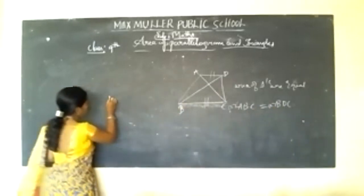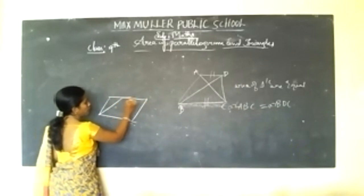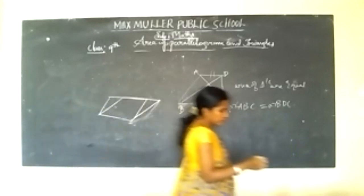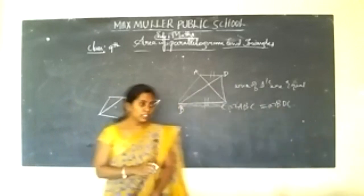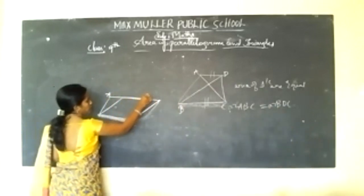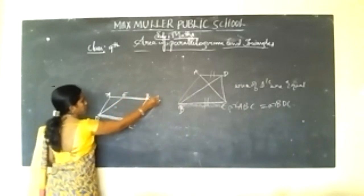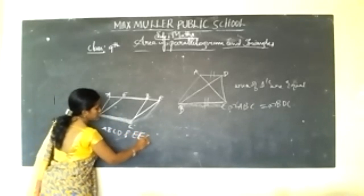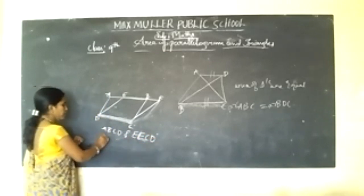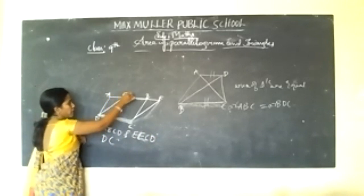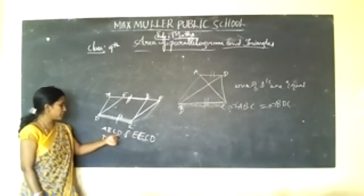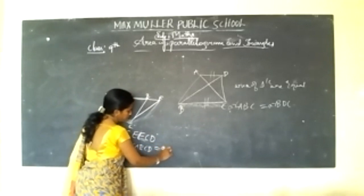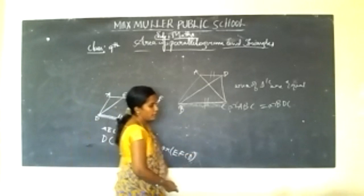Similarly, if you have two parallelograms ABCD and EFCD with common base DC lying between parallel lines, you can conclude area of ABCD is equal to area of EFCD.